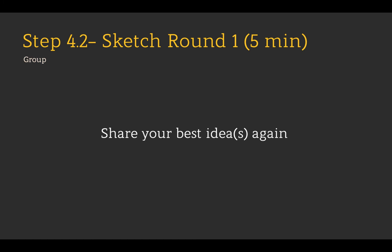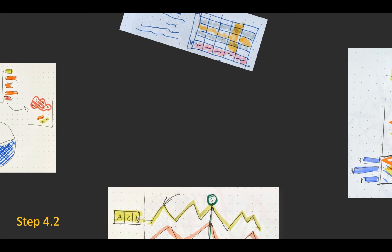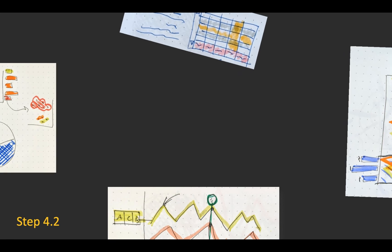In step 4.2, you'll be given another five minutes to share your best ideas again in a round-robin fashion. Just go around the table sharing what you think are your best ideas.